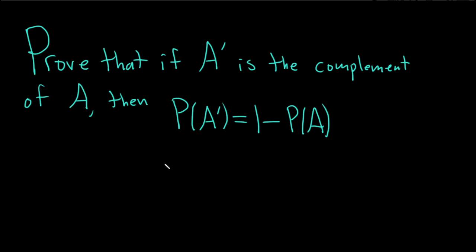In this problem, we have to prove that if A prime is the complement of A, then the probability of the complement is 1 minus the probability of A. And we're going to do it using the axioms of probability.